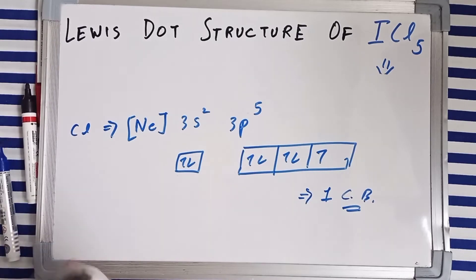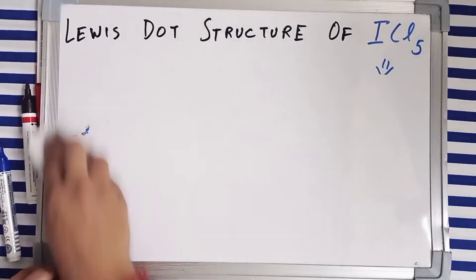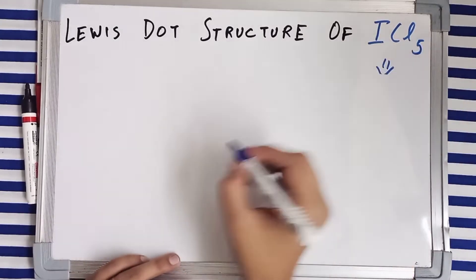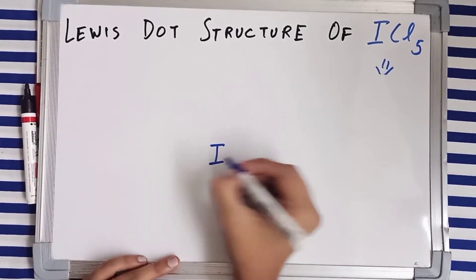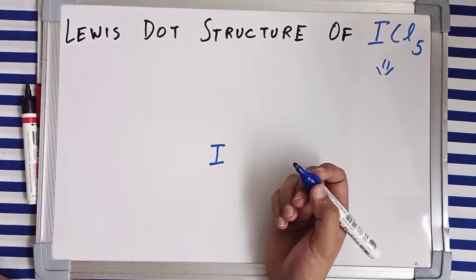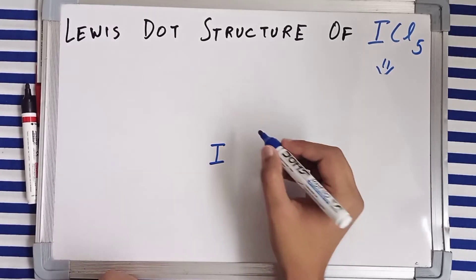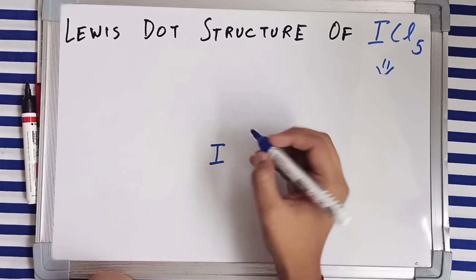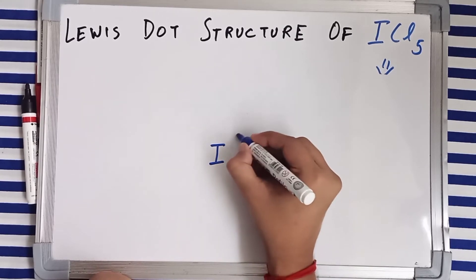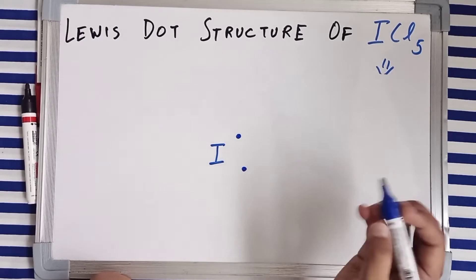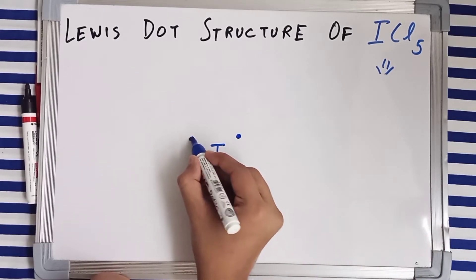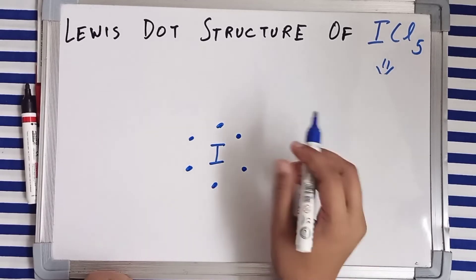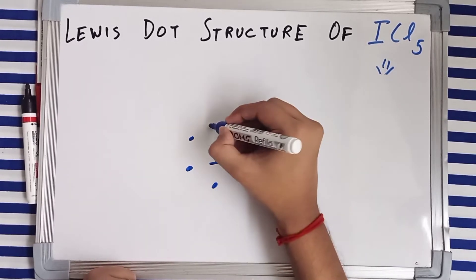Now let's get into the structural part of ICl₅. The central atom is iodine, and iodine has seven valence electrons. Let's draw the valence electrons for iodine — one, two, three, four, five, six, and one more here.